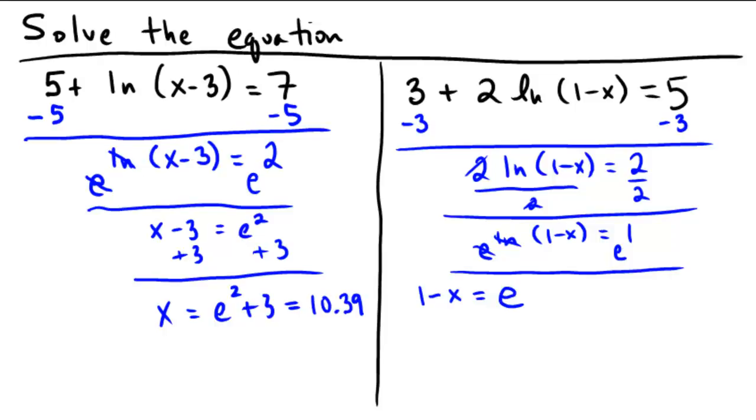And then, let's see, just subtract 1 from both sides so that negative x equals e minus 1. And then divide both sides by negative 1 so that x equals 1 minus e. So it looks like in this case x is equal to 1 minus e.